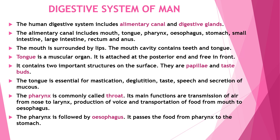The digestive system of man includes the alimentary canal and digestive glands. The alimentary canal includes the mouth, tongue, pharynx, esophagus, stomach, small intestine, large intestine, rectum, and anus.